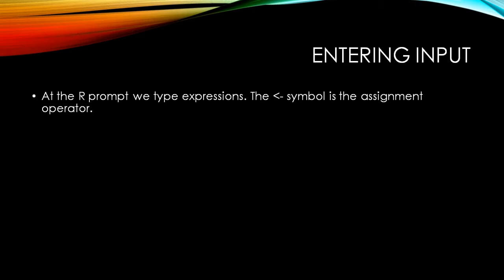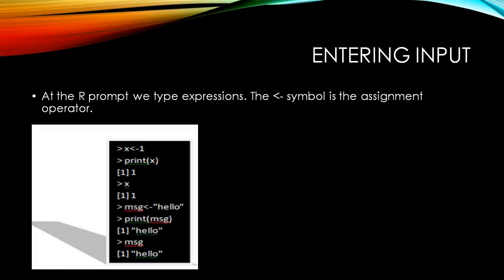This is how it works. We go into the R console and type the values. You can see this greater-than arrow — this is the default R prompt. When this prompt appears, that means you can type your values. So X, followed by less-than hyphen one — that entire less-than hyphen is called the assignment operator. This means I am assigning the value one to X. This is the R prompt, and X is the variable to which I am assigning the value one.